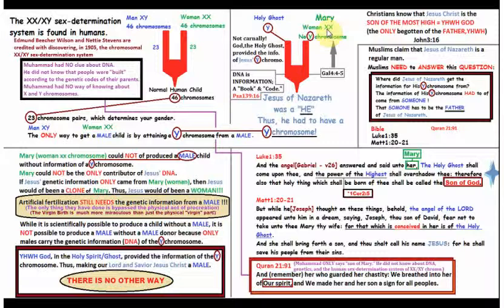Now, if we look in Luke chapter 1 verse 35, it says, And the angel, Gabriel, if you look in verse 26, it'll explain that it's Gabriel talking, Answered and said unto her, Mary. So you have Gabriel talking to Mary. The Holy Ghost shall come upon thee, and the power of the highest shall overshadow thee. Therefore, also, that holy thing which shall be born of thee shall be called the Son of God. This came from Gabriel.